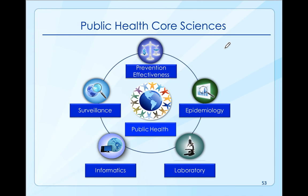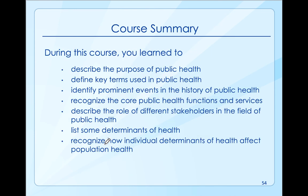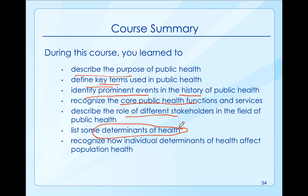In review, the public health core sciences are key. They help prevent. We're constantly doing surveillance, looking at prevention efforts, using epidemiology, and using laboratory and informatics to get information out. We talked about the purpose of public health, the key terms, and identified some real key events in history - think back to John Snow, and even to the Romans and Greeks and how they separated clean water from their sanitation. The core public health functions and services, the role of different stakeholders in public health. We know that where you live, work, and play is key. Know that how we act and what we do in our community does impact our overall health. That is a basic overview of public health.